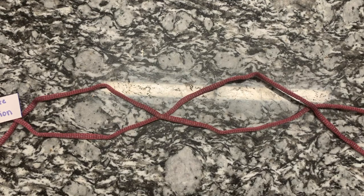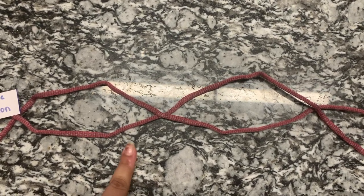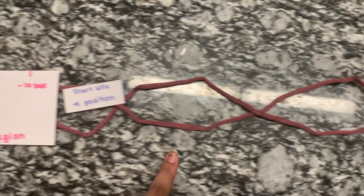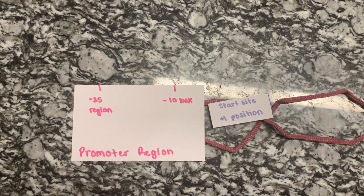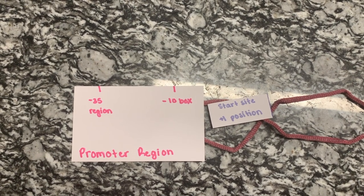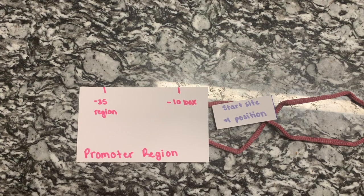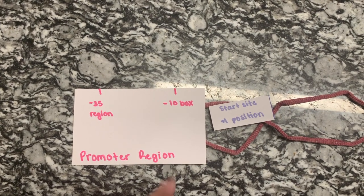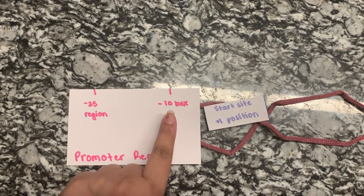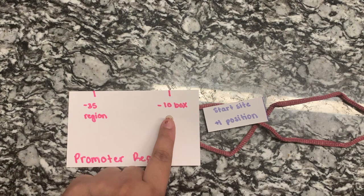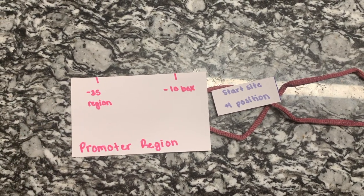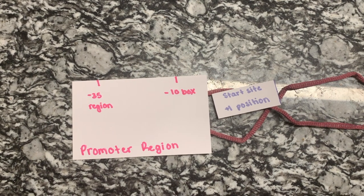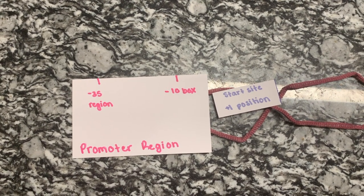Let's talk about template binding first. In order to get from DNA to RNA, we start with our DNA strand, which contains a promoter region positioned before the gene we want to transcribe. This promoter region contains two important sequences: one at the negative 10 box, also referred to as the TATA box, and the other at the negative 35 region. Both of these regions act as a landing pad for our enzyme, RNA polymerase.